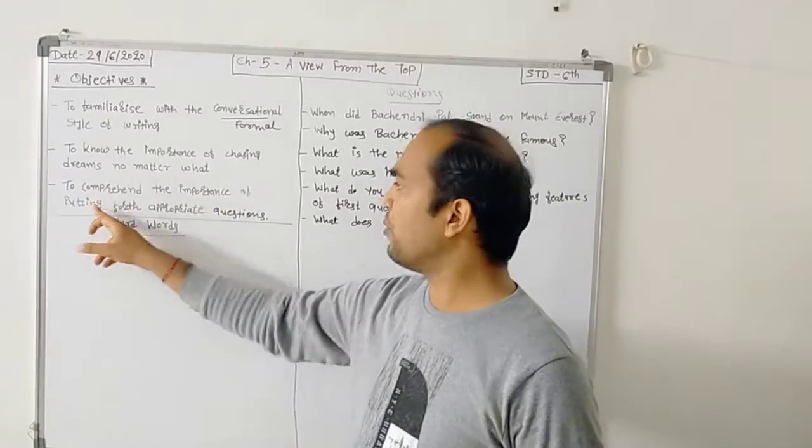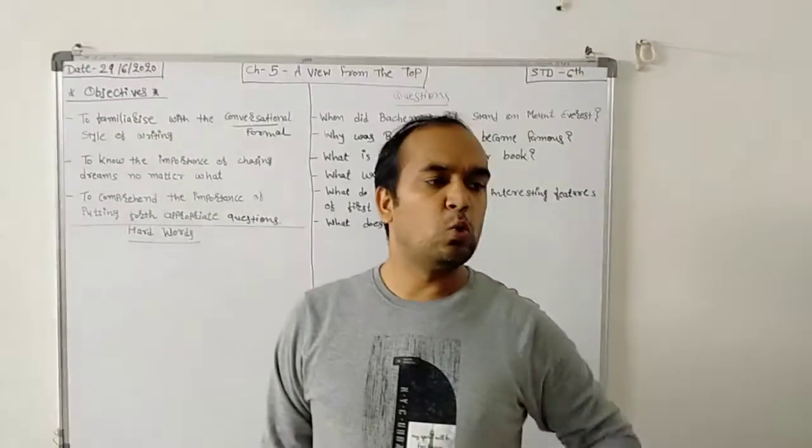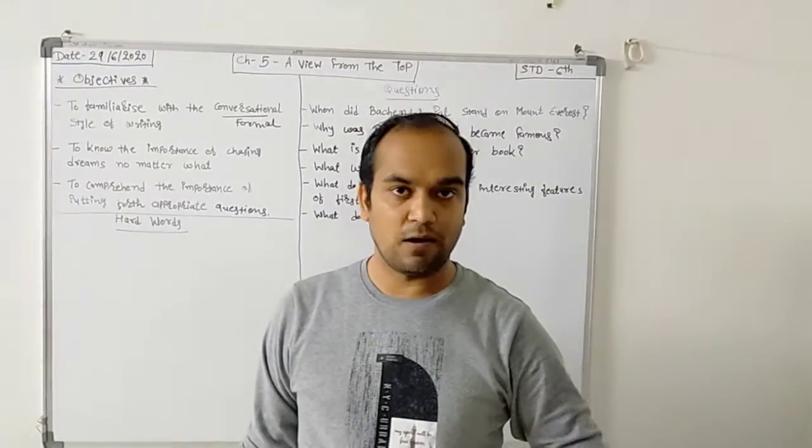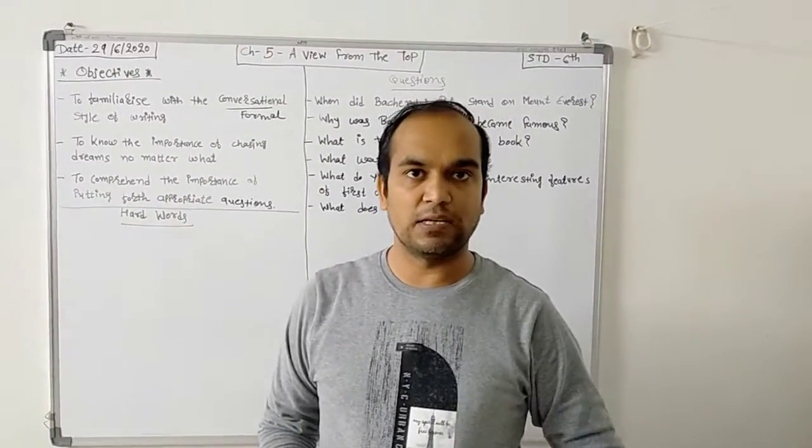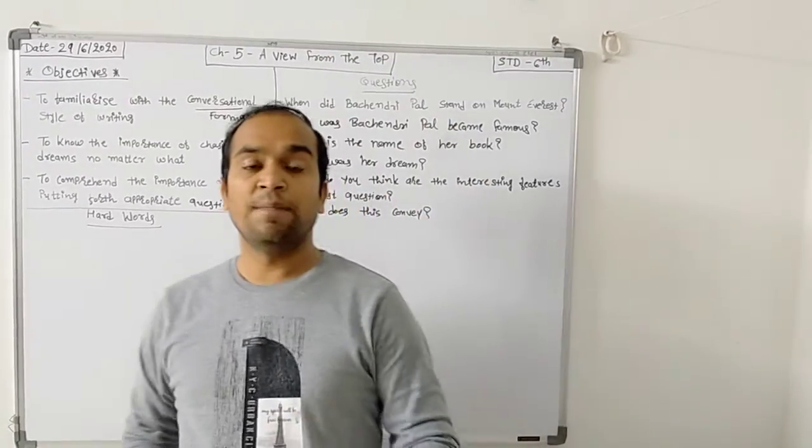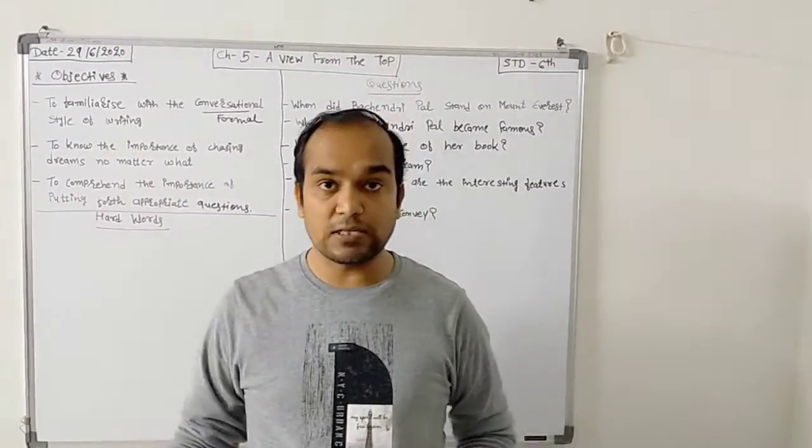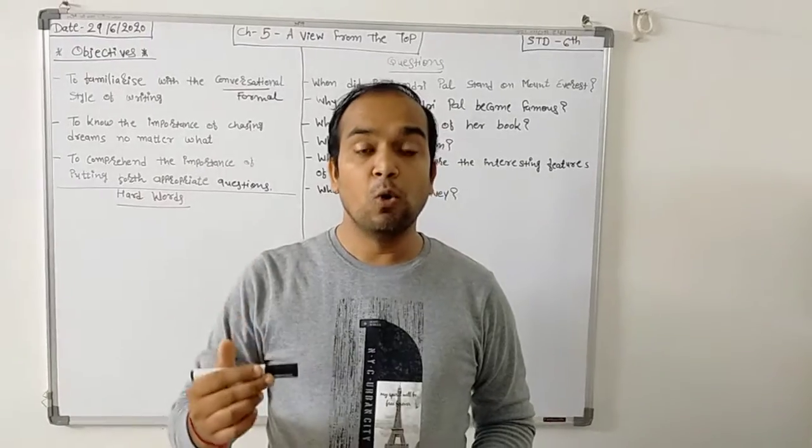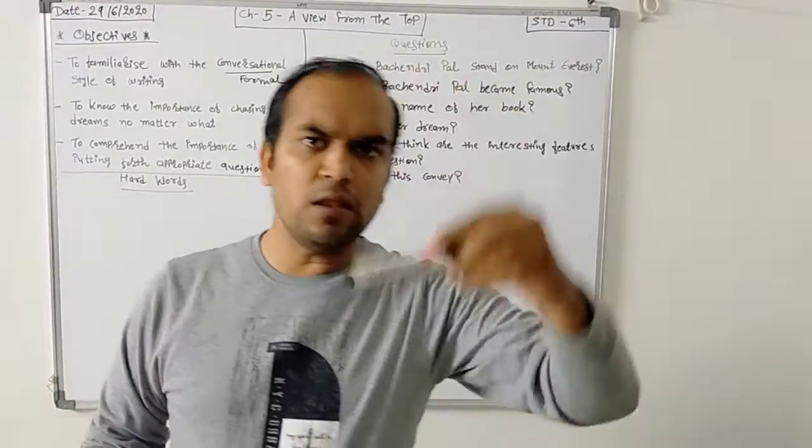Third one: to comprehend the importance of putting forth appropriate questions. When we are asking questions to another person, that time we should ask in appropriate manner. Because to comprehend the importance of putting forth, because it is one type of comprehension. So we have to comprehend the question, we have to make a list of the questions. Now in this chapter you will see what types of questions, what is the language the person uses in his question, and how is he asking the question to Bachandri Pal. You will learn these things in this chapter. Thank you.